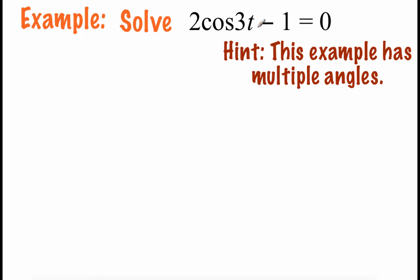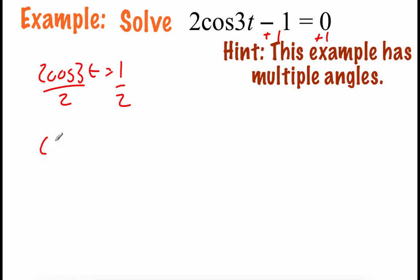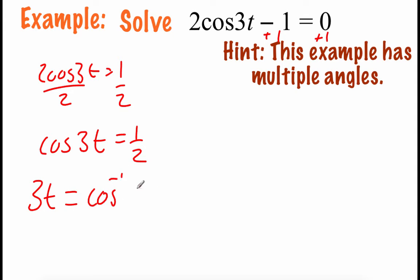Take a look at our next example: 2 cosine of 3t minus 1 equals 0. This one does have multiple angles, meaning there's a number in front of our t value, so remember that's going to affect our angles and period at the end. Starting to solve: add the 1 to the right-hand side to get 2 cosine of 3t equals 1. Dividing each side by 2 gives us cosine of 3t equals 1/2. Rewriting as an inverse, 3t equals the inverse cosine of 1/2, and checking the unit circle for a cosine value of 1/2, that happens at pi over 3 and also 5 pi over 3.